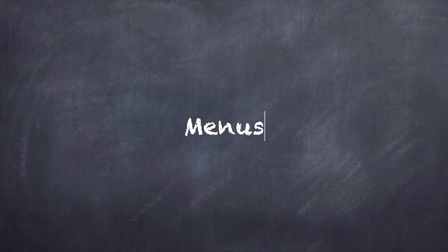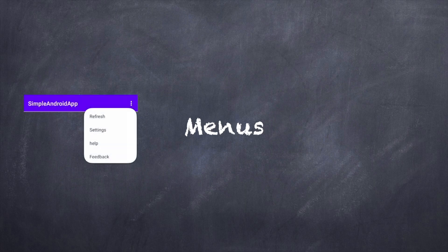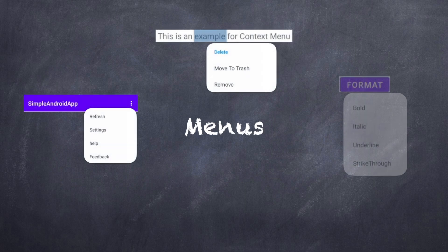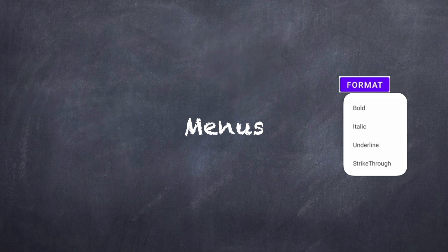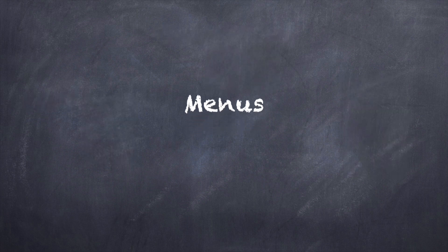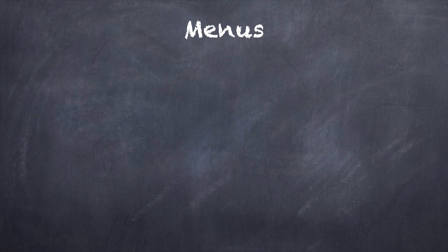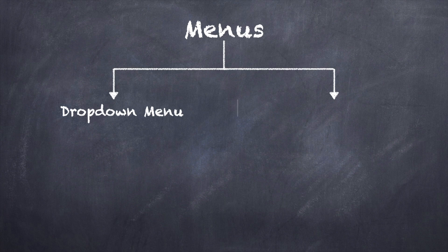Hello friends. Today I am going to explain about menus. First of all in Android projects, when do we use menus? To make a selection from multiple options, we use menus. And why do we use menus? Because they are less prominent and they do not take your screen space. Now in Android there are two types of menus: dropdown menus and exposed dropdown menus.